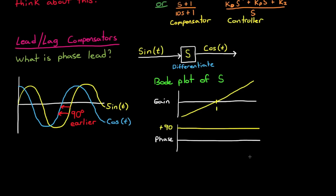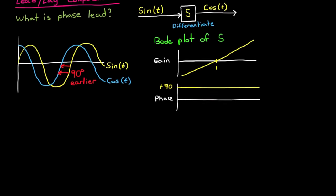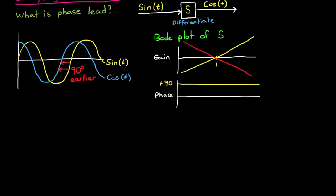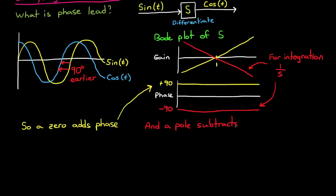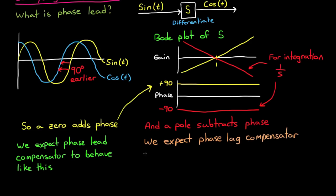Alright, so we can see now that differentiation gives you positive phase. And conversely, integration would give you negative phase. And that's because integration is 1 over s, which is just the negative of differentiation on a Bode plot. So a zero in a transfer function adds phase, and a pole in a transfer function subtracts phase. But differentiation and integration alone don't make a phase lead and lag compensator. However, just like with a differentiator, we would expect the lead compensator to add positive phase to the output, for at least a certain range of input frequencies, and we would expect the lag compensator to add negative phase to the output, so that the output lags behind the input.